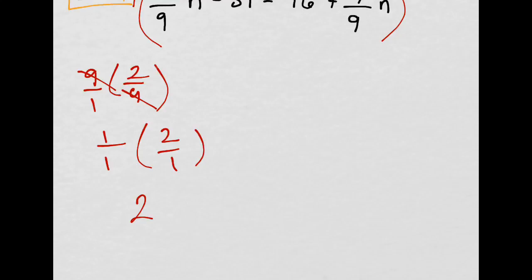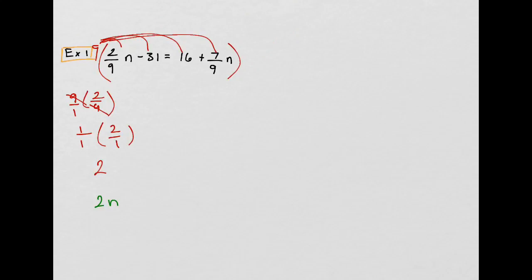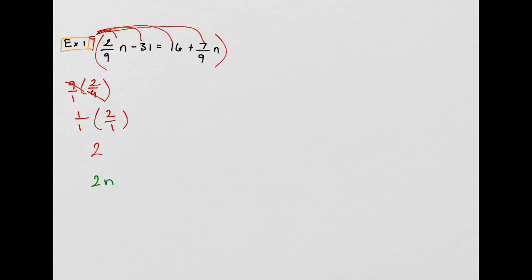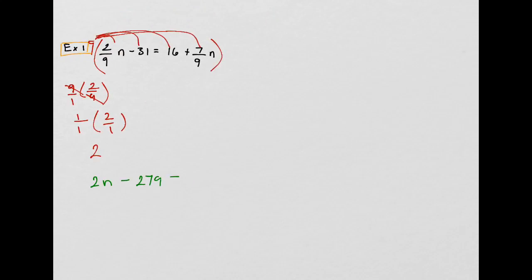So, this is just 1 times 2, that's just 2. So, I have 2n, and then 9 times negative 31. Remember, positive times a negative is a negative, so I'll have negative 279.